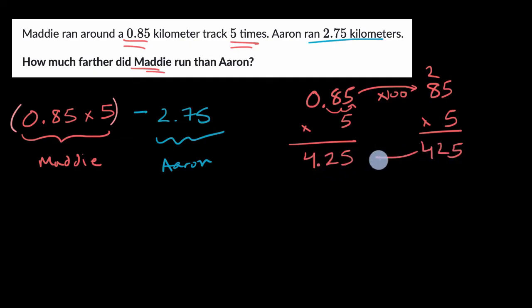And so this answer right over here is going to be a hundred times larger than what we need over here. So then you divide by 100. You move the decimal back two spaces to the left to get to 4.25. But Maddie ran 4.25 kilometers more than Aaron.